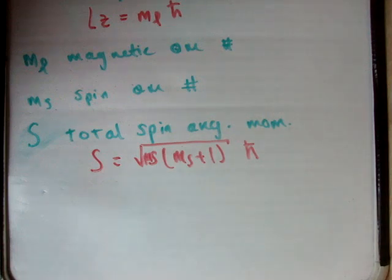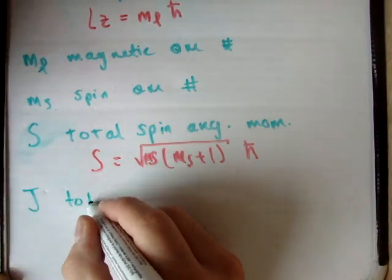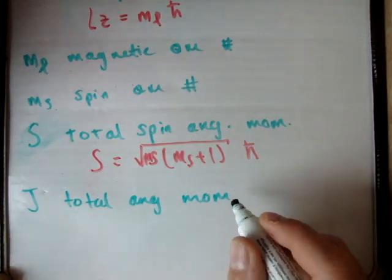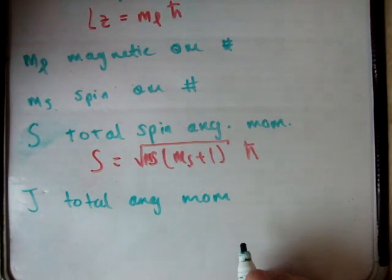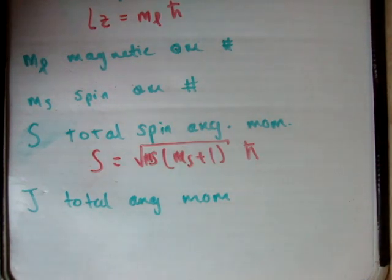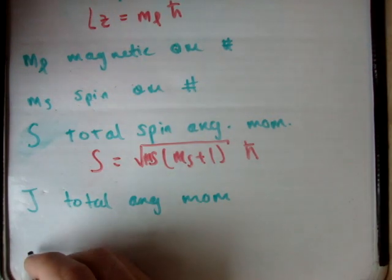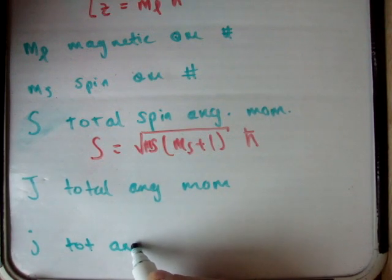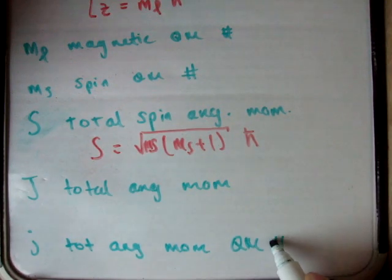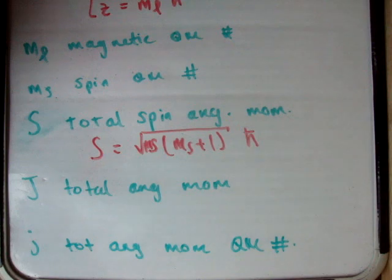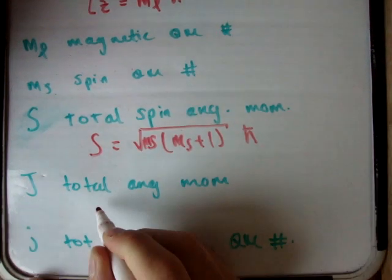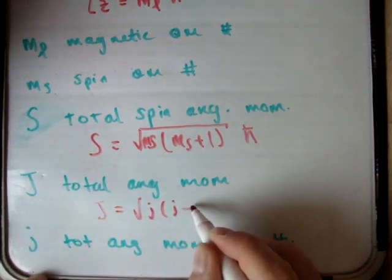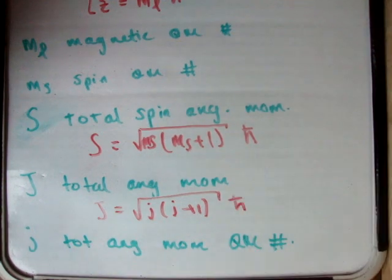The last one is the total angular momentum. Capital J is our total angular momentum, and we have a total angular momentum quantum number j. Capital J is equal to the square root of j(j+1) in units of h-bar.